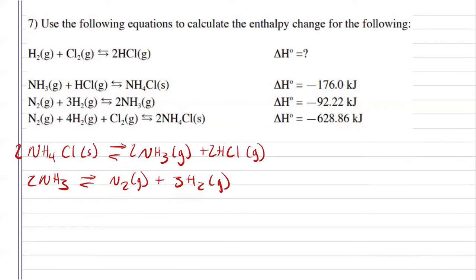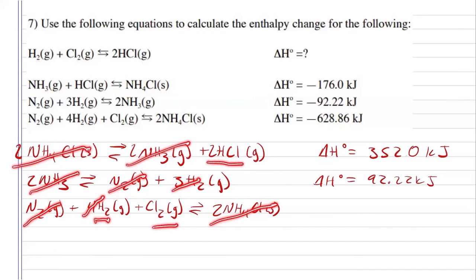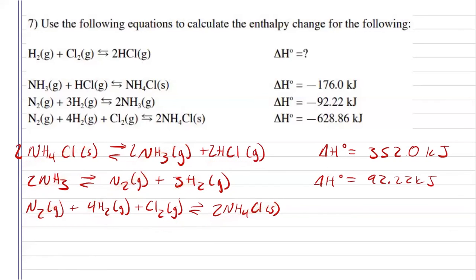All I'm going to be left with to worry about now is the nitrogen and the hydrogens canceling them out. The enthalpy for my first reaction, since I reversed it and multiplied it by two, will be 352 kilojoules. And for the second one, since I also reversed it, it's going to be positive 92.22 kilojoules. Now, for the third reaction, looking to see if I need to make any changes — since I didn't make any changes to it, my enthalpy for that reaction is just going to be the original, so negative 628.86 kilojoules.